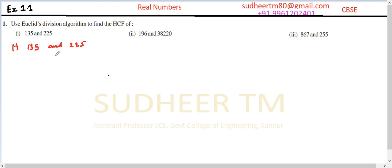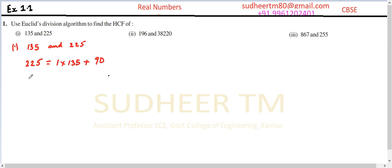The largest number is 225, so we divide 225 by 135. We get a quotient of 1, so we can write: 225 = 1 × 135 + 90. The remainder here is 90.